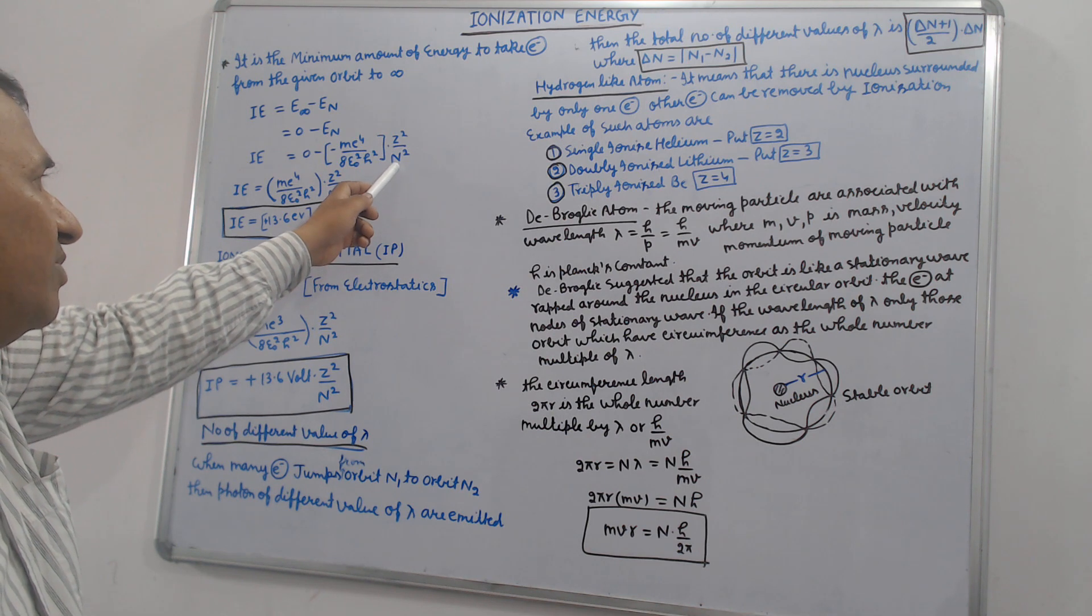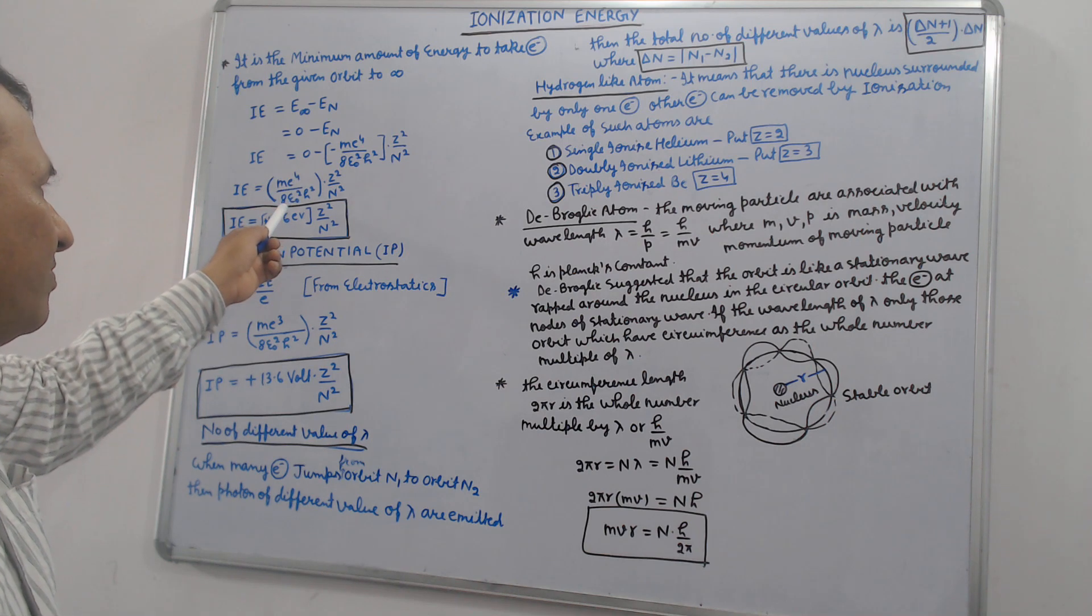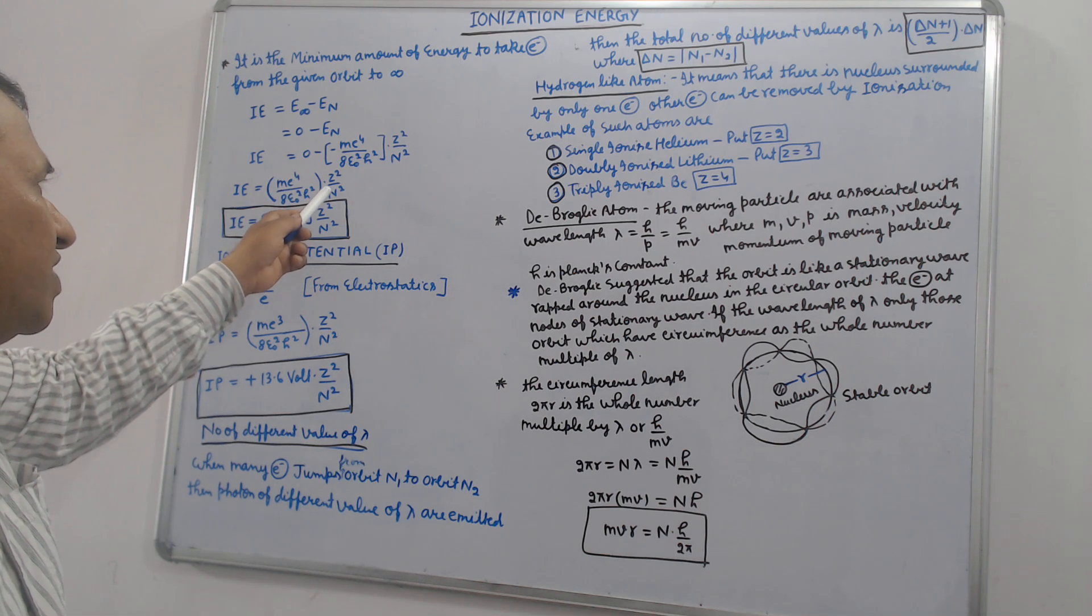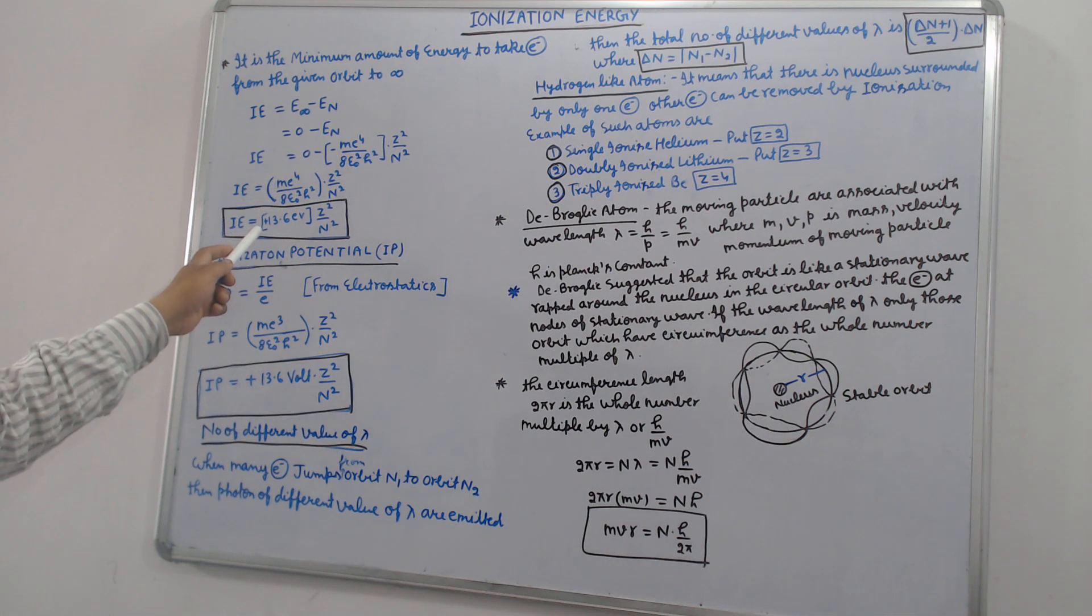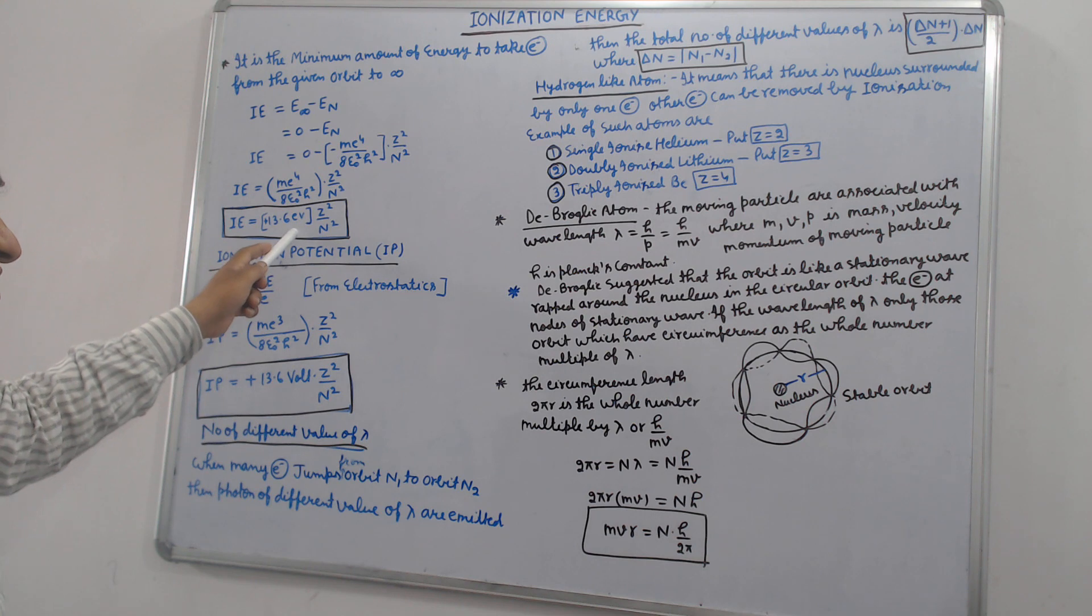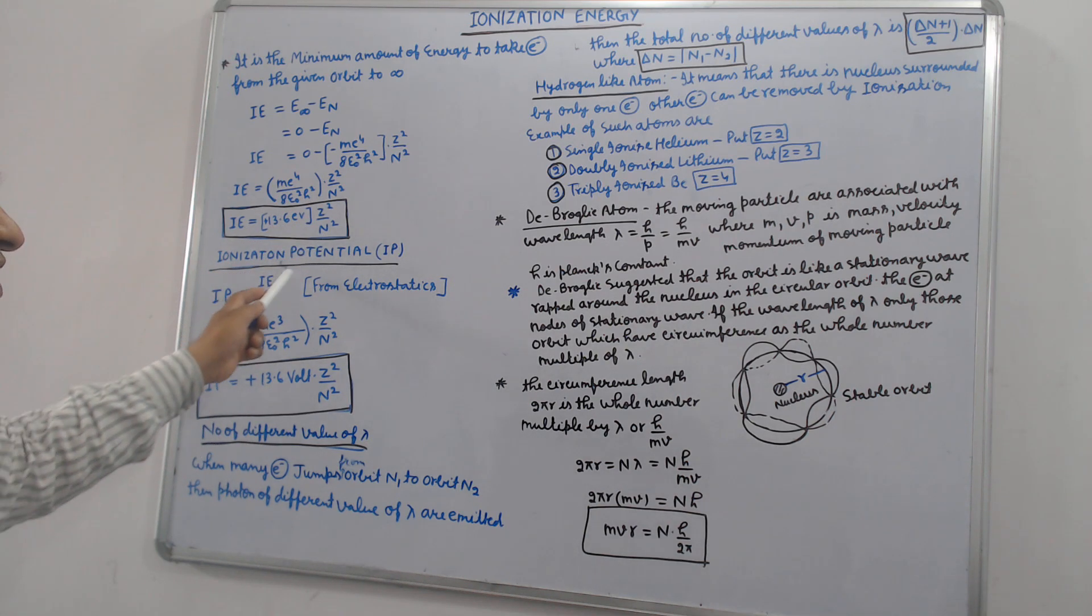N is number of orbits. So ionization energy equals Me⁴ upon 8ε₀² h² Z² by N². Putting the values, we get 13.6 electron volt. One electron volt equals 1.6 into 10 power minus 19 joule, Z² by N².